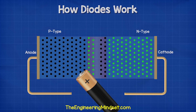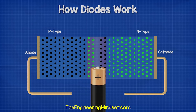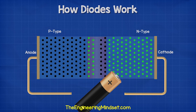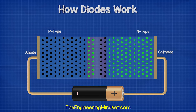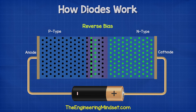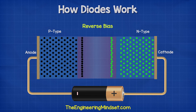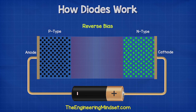When we reverse the power supply so that the positive is connected to the N-type cathode and the negative is connected to the P-type anode, the holes are pulled towards the negative and the electrons are pulled towards the positive, and this causes the barrier to expand. Therefore the diode acts as an insulator to prevent the flow of current.